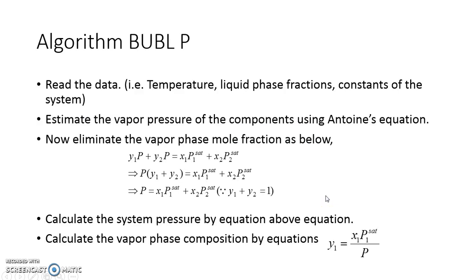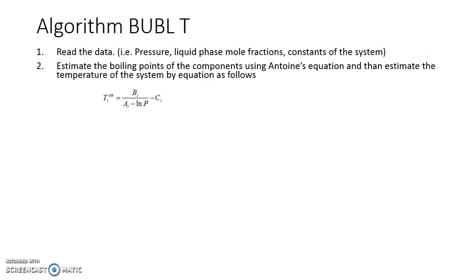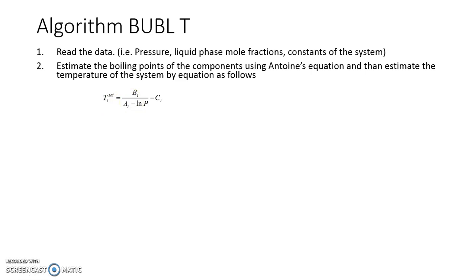For Bubble T, since we know pressure and liquid phase mole fractions, whenever temperature is unknown our first priority is to get an estimate of temperature so we can calculate vapor pressure. Using Antoine's equation with the given pressure, we substitute A, B, C for each species to get T1_sat and T2_sat.